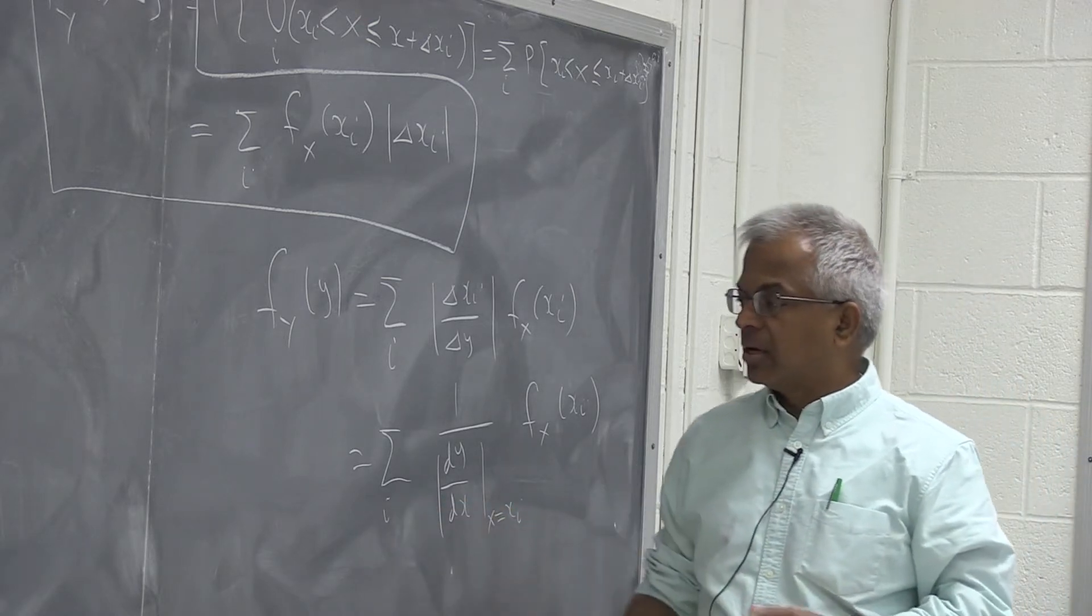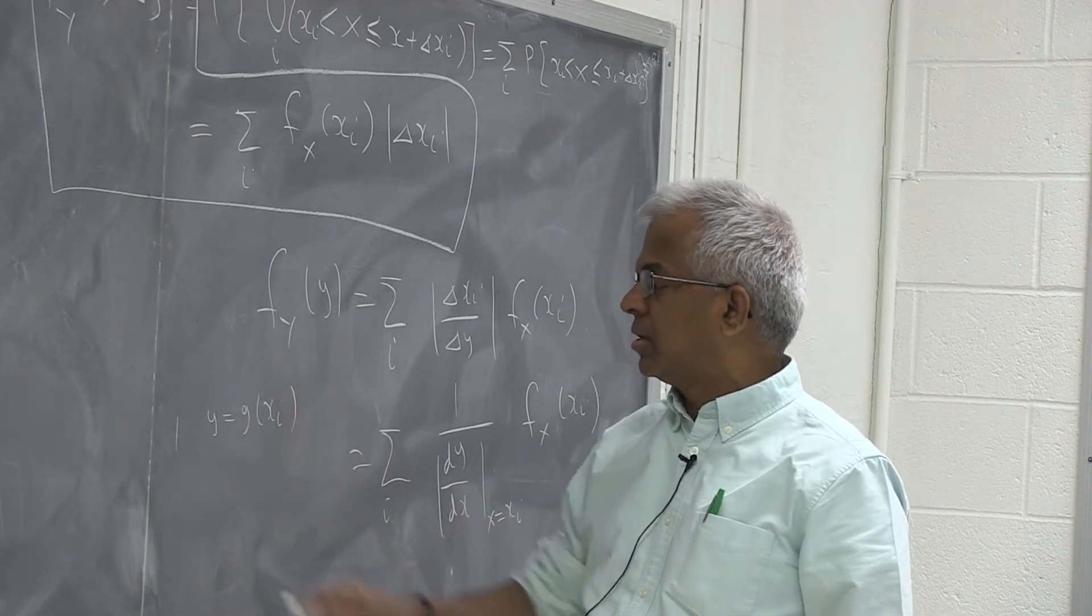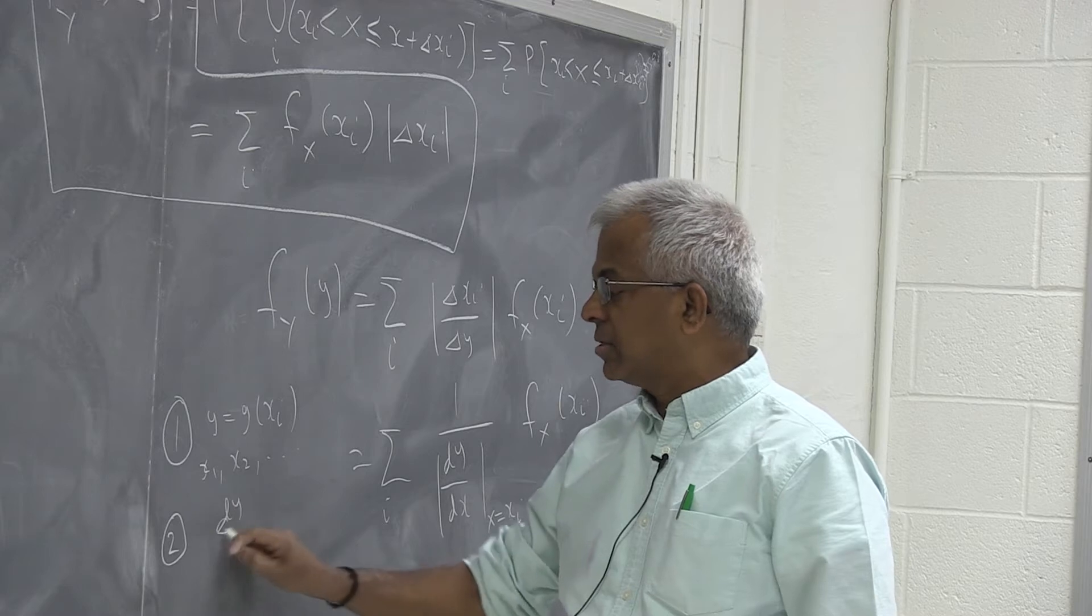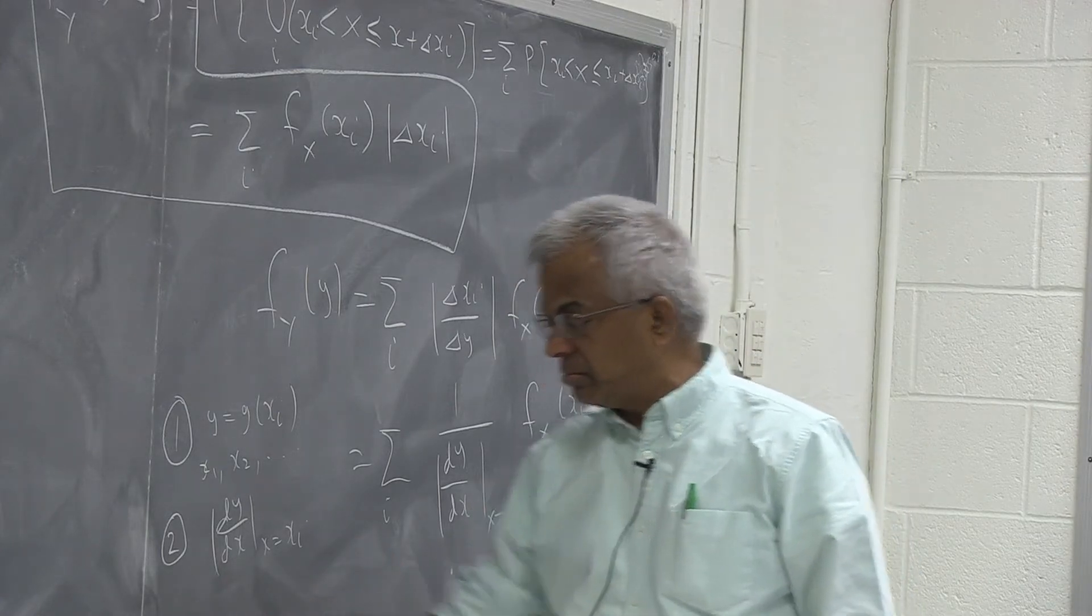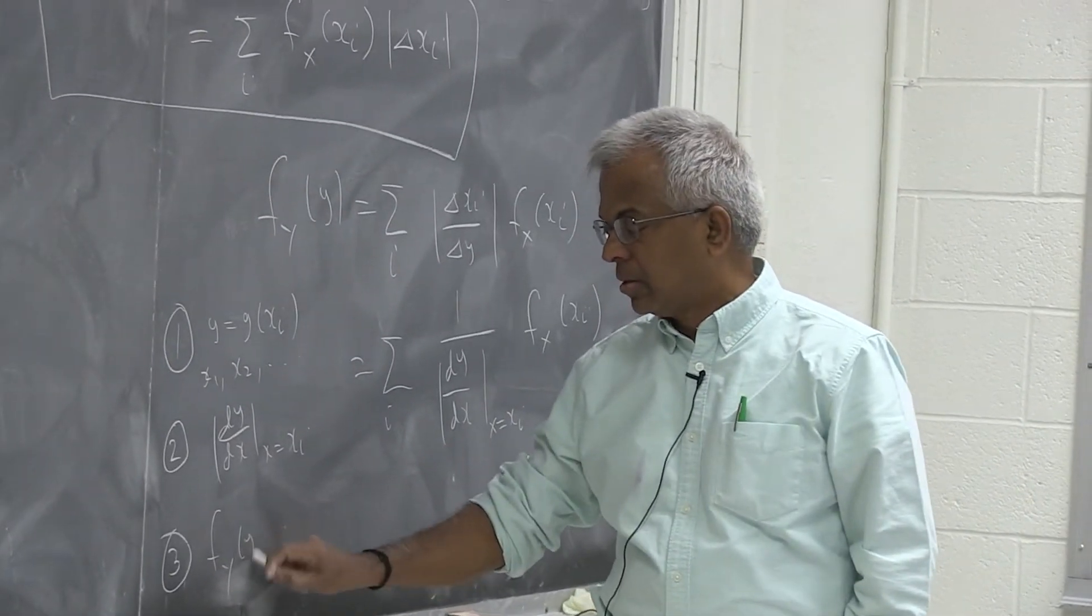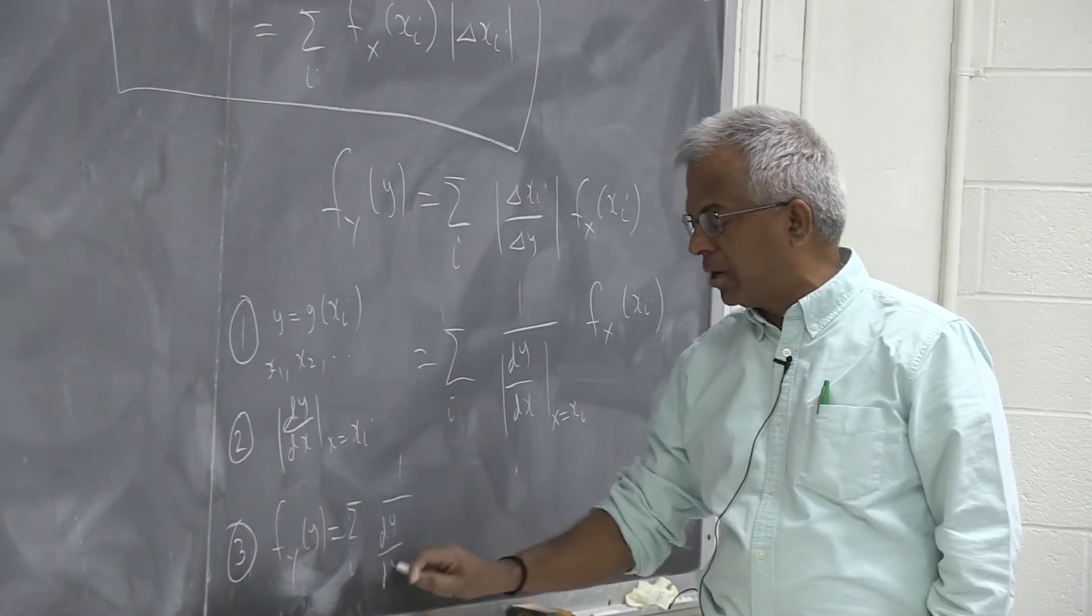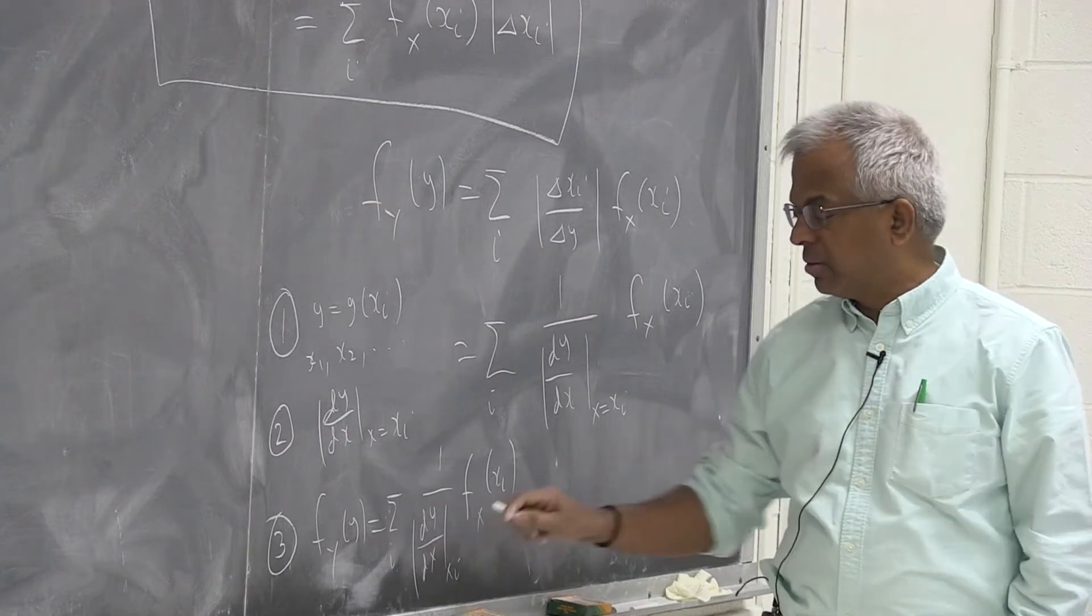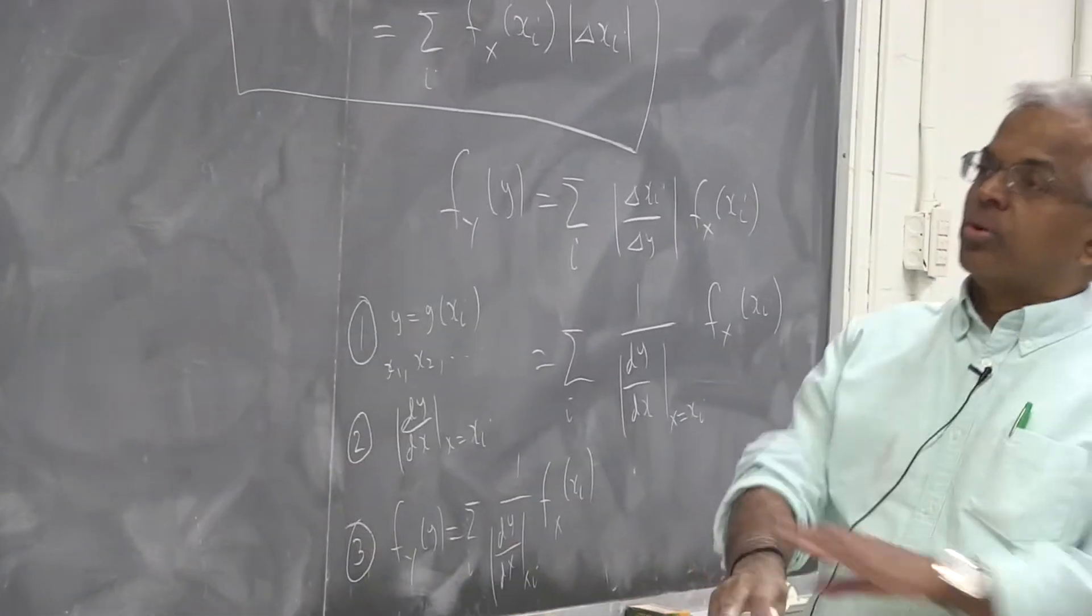So you can see if you want to apply this formula, the quick steps are you fix y and solve the equation y equal to g(xi). So you tabulate the roots x1, x2, etc. Then compute dy by dx and evaluate it at these roots, x equal to xi. And the third step is simply substitute into this formula, f_y(y) is summation over all the roots where the density, of course, the summation only matters where at those roots where the density function is non-negative. Because if the density function is 0 here, those particular roots have no contribution. So let's just do a quick example.